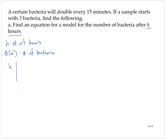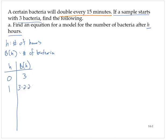So we set up a table of values. At zero hours, the sample starts with three bacteria. Now after one hour, the bacteria will double every 15 minutes. So in one hour, there are four doubling times. So the number of bacteria would be three times two times two times two times two, or three times two to the fourth.